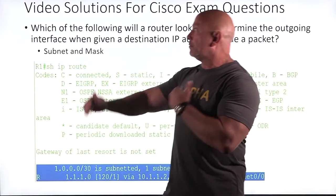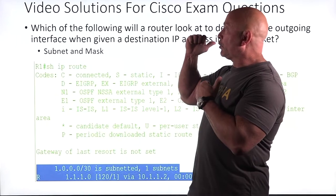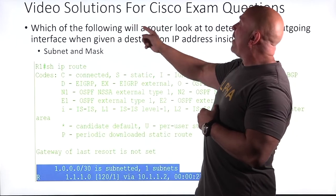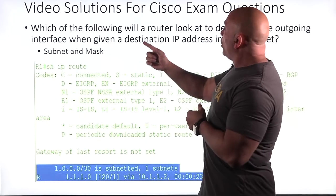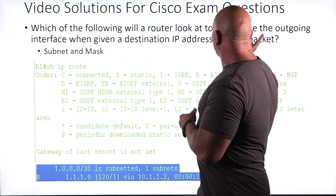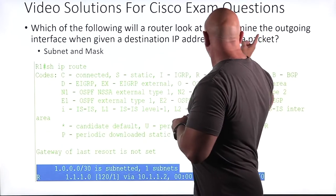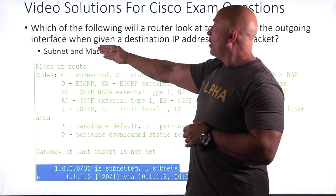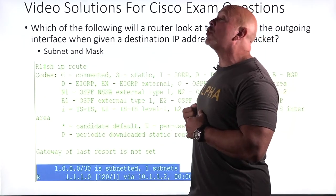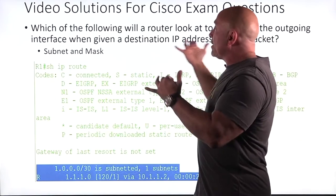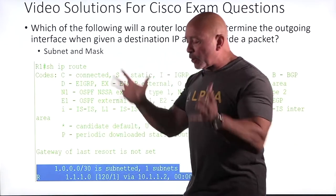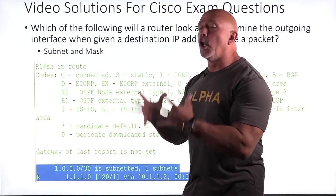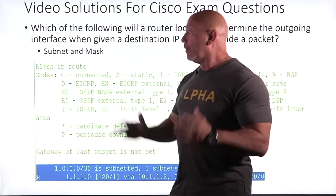All right, here we go again — video solutions for Cisco exams. Which of the following will a router look at to determine the outgoing interface when given a destination IP address inside a packet? How does a router determine where to send this packet? What does it have to look at?